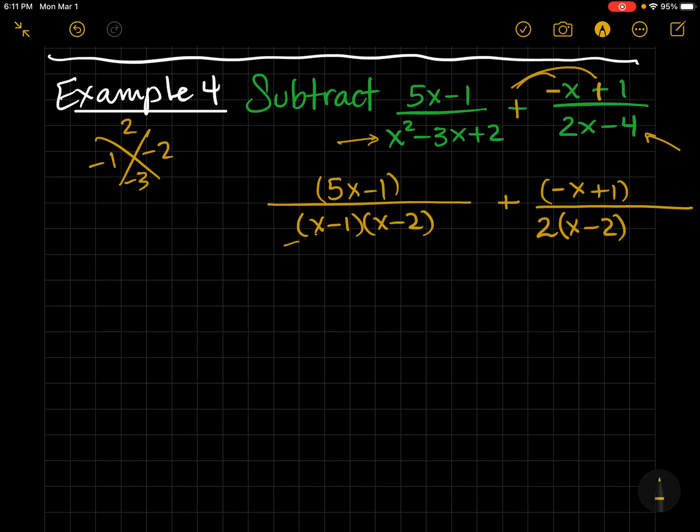Now, it's easier for me to see what my common denominator is going to be. Here, I have an x minus 1. I have an x minus 2. And I have a 2. So, for my common denominator, I'm going to write everything one time. Although there's an x minus 2 on both, I only need to write that one time. So, now I'm going to say, okay, what am I missing from this denominator that I have down here? So, I'm missing a 2. So, I'm going to do a 2 on the top and bottom.